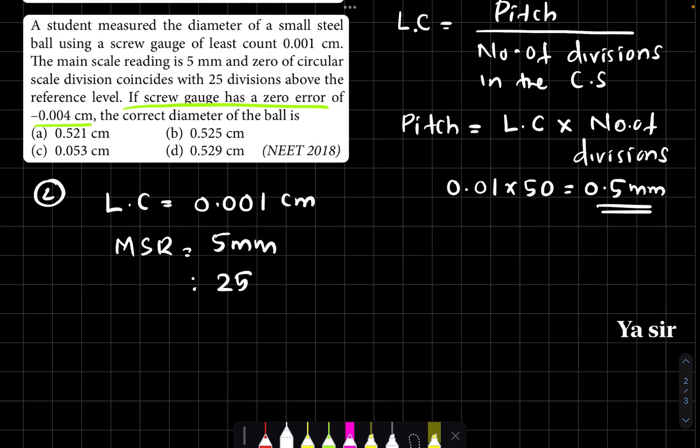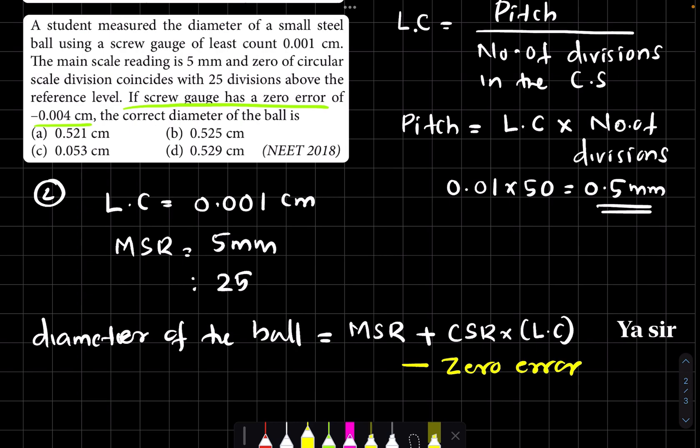Now we need the equation for the diameter of the ball. The formula is: diameter equals main scale reading plus circular scale reading times least count. But since there's a zero error mentioned in the question, we must subtract it: minus zero error.